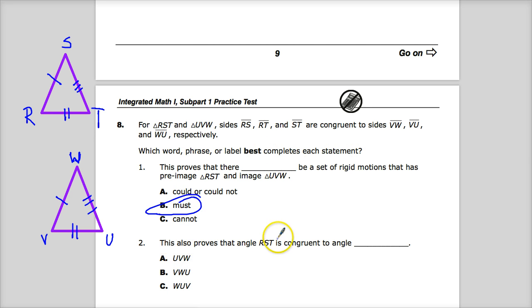The other part says, this also proves that angle RST is congruent to angle what? Now, me writing them this way, in terms of drawing this one based on what the corresponding sides were, makes this question very easy to answer. RST is here, VWU is here, so right there. So the answer to number 8 is B, and the answer to part 1 is B, and part 2 is B as well.